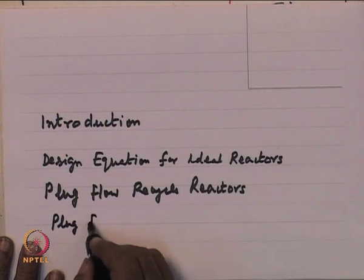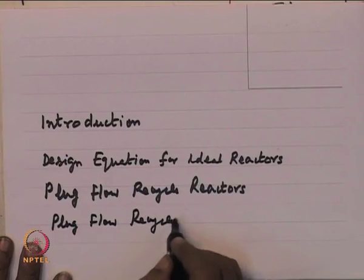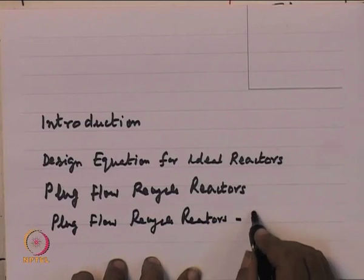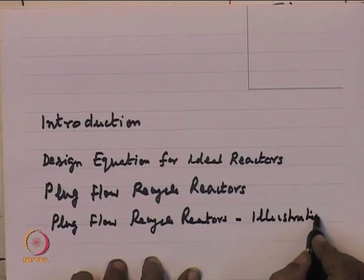When recycle is required, we need to set up design equations that take into account the effect of recycle — on the size of the equipment and on the extent of reaction. This can be steady state or unsteady state, because you might want to understand how long it takes for a process to reach steady state. We will look at plug flow recycle reactors and some illustrative examples.